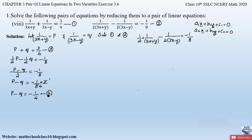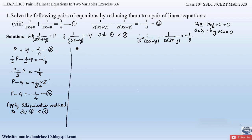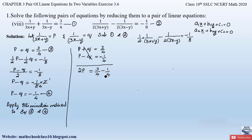Now let us apply the elimination method to equations 3 and 4 to find the values of p and q. Equation 3 is p + q = 3/4 and equation 4 is p − q = −1/4. The coefficient of q is 1 in both equations, and the signs are plus and minus, so we can directly eliminate q.